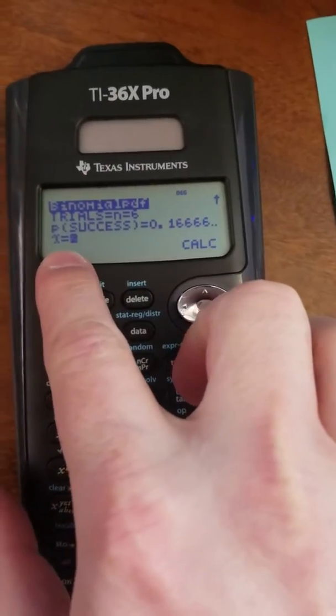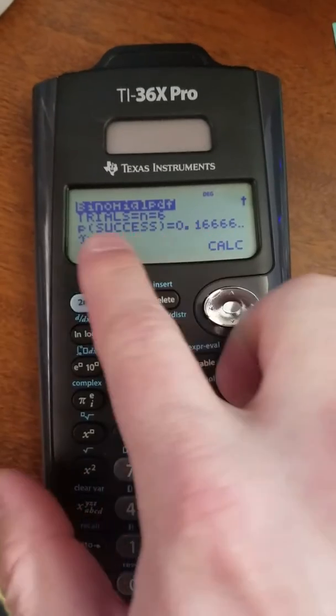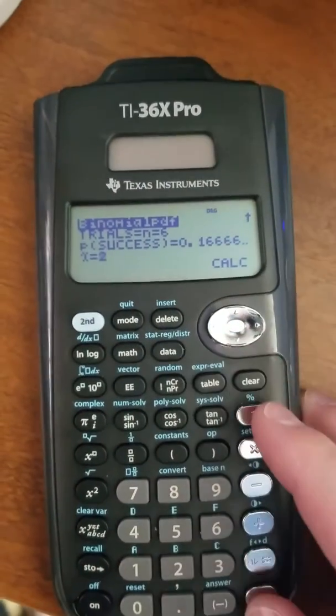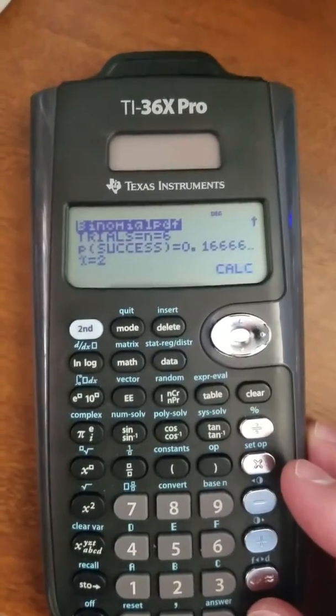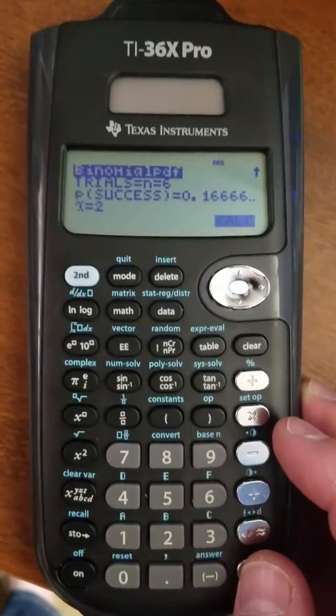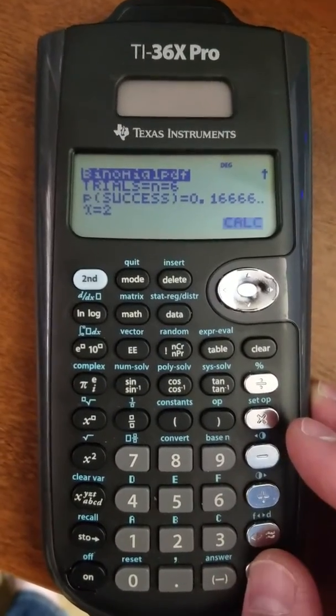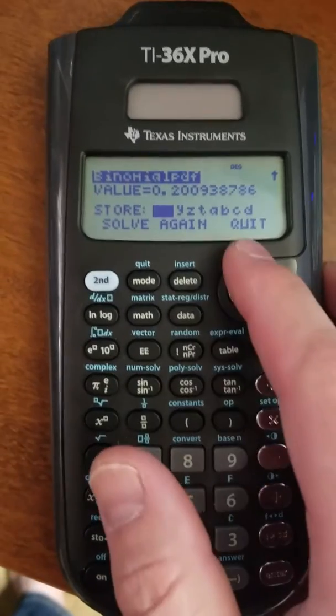And x, that's the number of successes. So the number of trials, the probability, and the number of successes. This would give me the probability of getting exactly two successes when I roll a die six times. Hit calc, and you can see it gives me the value there.